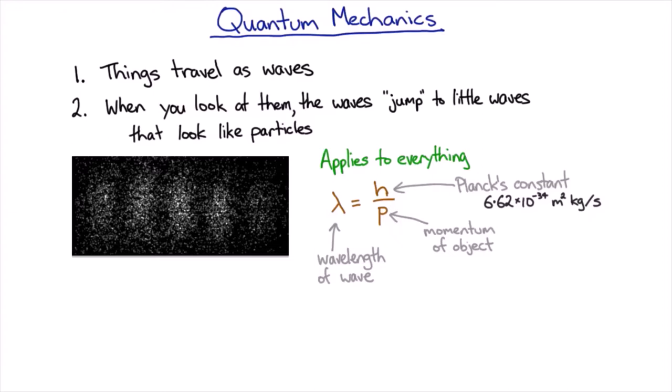So this relationship between the wavelength and the momentum was developed in the mid-1920s by de Broglie. And a couple of years later, Erwin Schrödinger developed the full mathematical description of how quantum mechanical systems change in time.